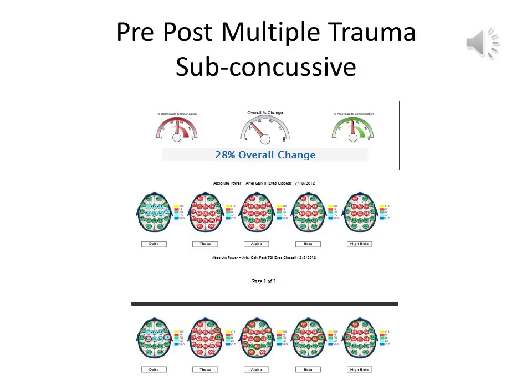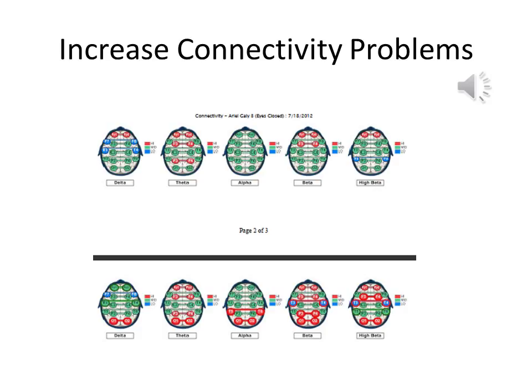Here is a pre-post sub-concussive TBI. The client had already had a concussion from an auto accident nine months prior. The post map was taken the next day after the event, which involved a blow to the posterior region. Changes in magnitude are minor, but overall changes in coherence, phase, dominant frequency, and asymmetry result in a 28% change in brainwave distribution. So even sub-concussive events can have significant impact. In this slide, we can see the more considerable change in the coherence features of the same map, especially posterior hypercoherence related to the site of the trauma. The left and right hemispheres can be seen increasing cooperation to compensate for losses.